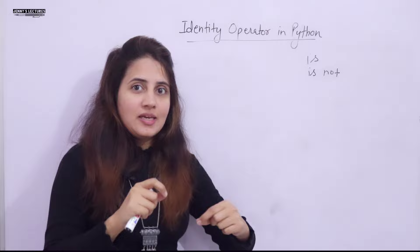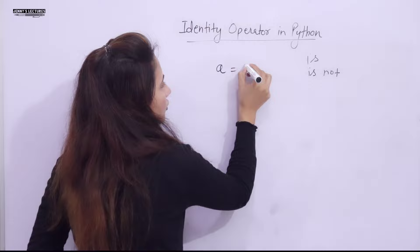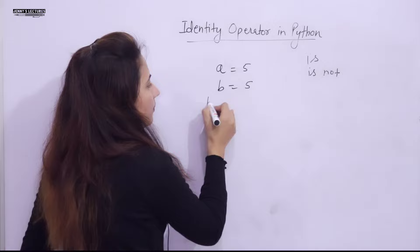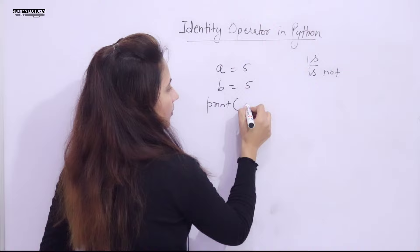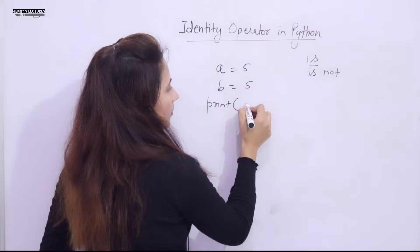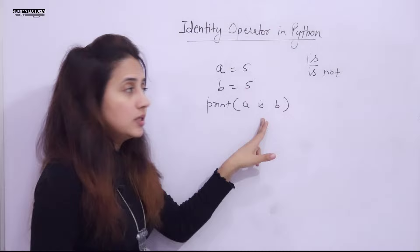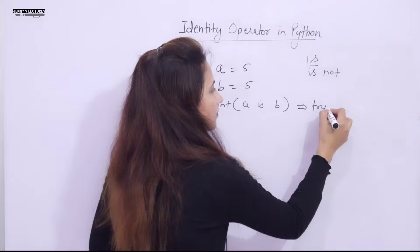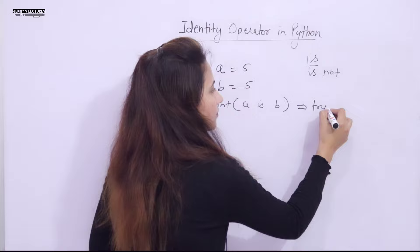Let's discuss this with an example. If I take `a = 5` and `b = 5`, and I print `a is b` using the identity operator, it will return True. Now you might think it's comparing values because both are 5 — but no. Python is a purely object-oriented language, so everything is considered an object.